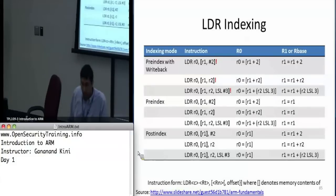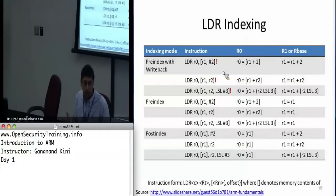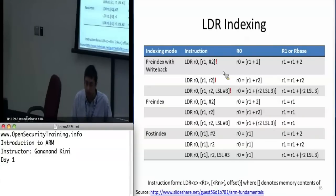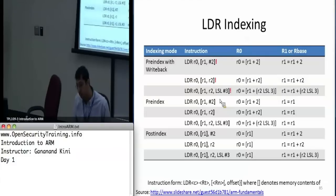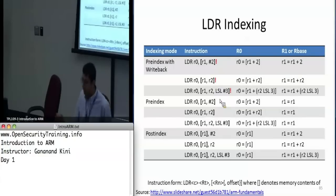Here's an example. For pre-indexed with writeback: LDR R0, [R1, #2]! — it adds 2 to R1, stores the value at that address into R0, and also updates R1 with R1 plus 2. You can also include barrel shifts in your addressing operation to calculate an address, likely a power of 2, and update the register. This gives you a lot of code optimization in one instruction.